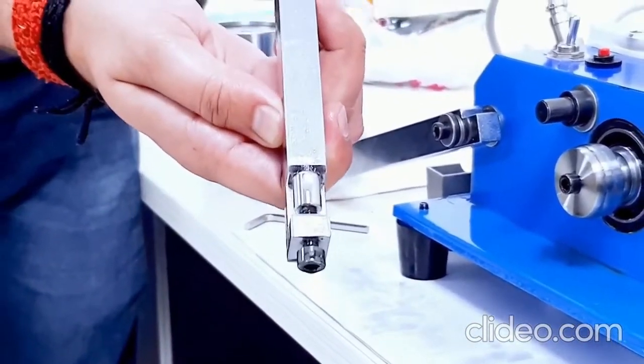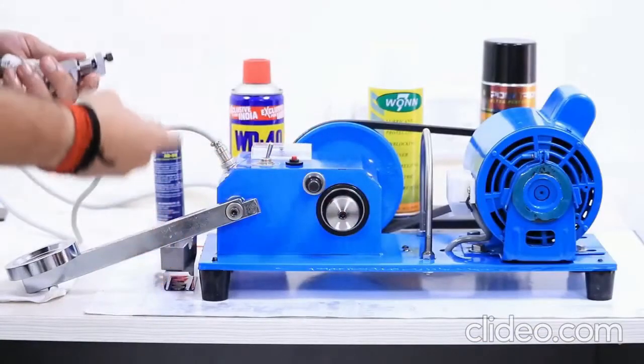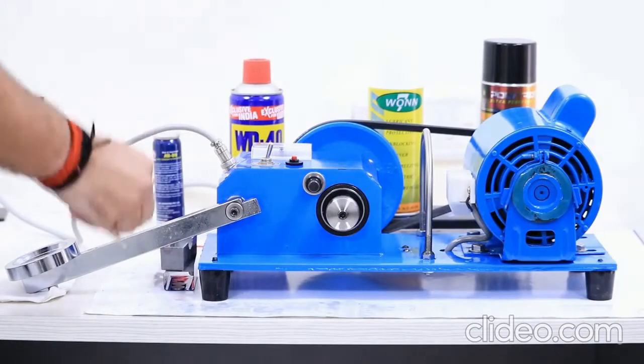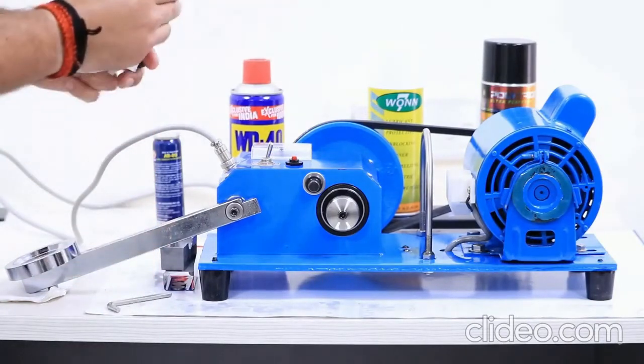Now we are going to test Polytron penetrating lubricant, which claims that it works as a lubricant, rust remover, and corrosion preventer on any surface.